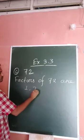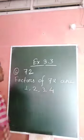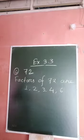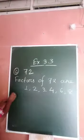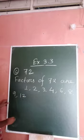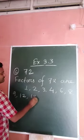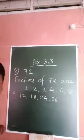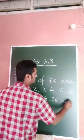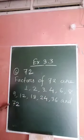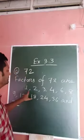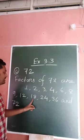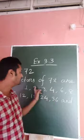Factors of 72: 1, 2, 3, 4, 6 can also divide. 8, 9, 12, 18, 24, 36, and 72. So these are the factors of 72: 1, 2, 3, 4, 6, 8, 9, 12, 18, 24, 36, and 72.